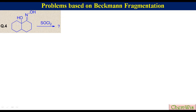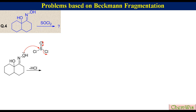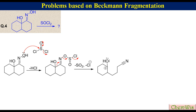Question 4: Predict the product when the oxime of hydroxydecalone is treated with thionyl chloride. In this example, the alpha carbon is attached to oxygen, so it will promote fragmentation. Reaction of the hydroxyl group of the oxime with thionyl chloride liberates HCl and gives rise to the sulfonyl chloride derivative. The leaving group departs as sulfur dioxide and chloride ion, and the C-C bond breaks to produce the cationic nitrile, which is resonance-stabilized. Removal of a proton gives the product.